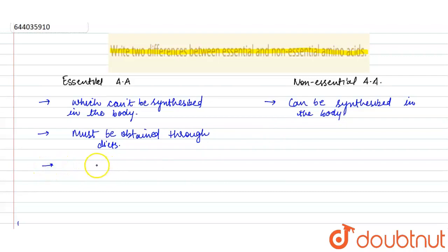They are available in animal products, whereas these can be obtained from both animal and plant products.